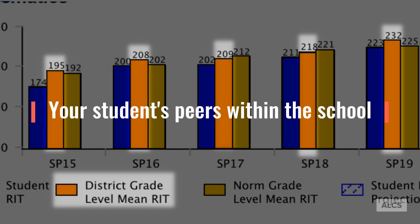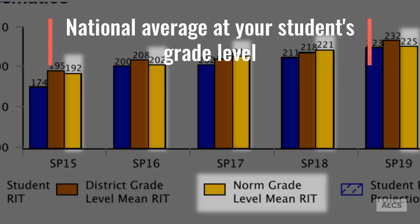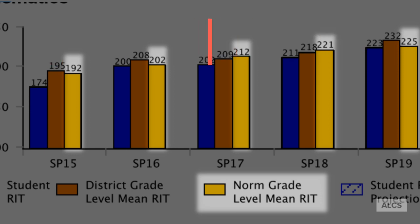The orange bars indicate the median score for all of the other students at the school who took the test at the same grade level. The yellow bars indicate the national mean score, meaning all of the students across the country at the same grade level who have taken the same test.